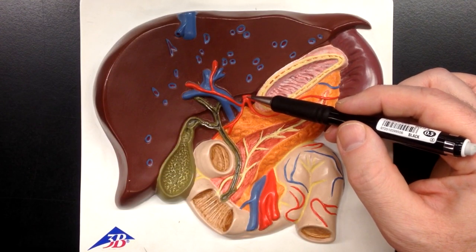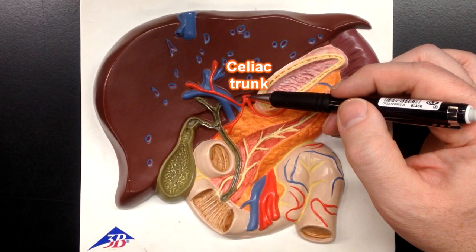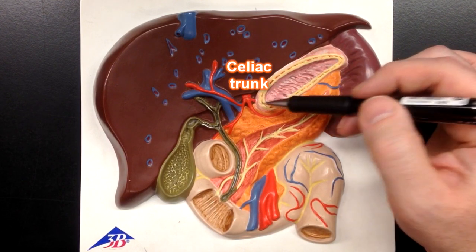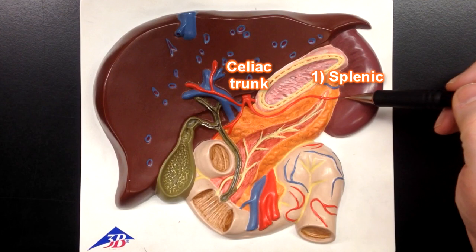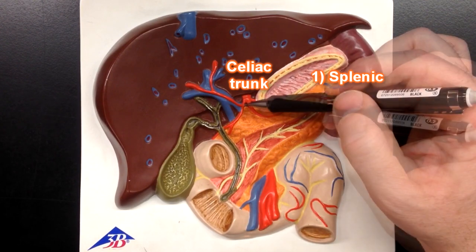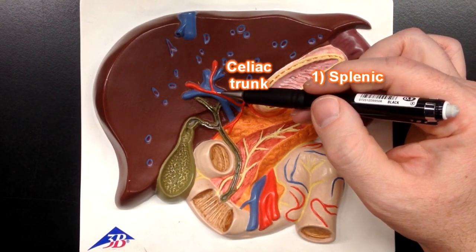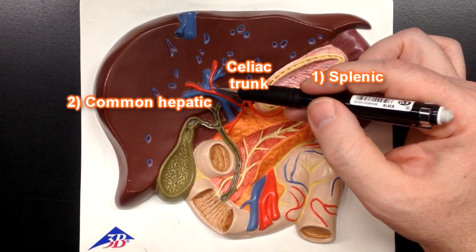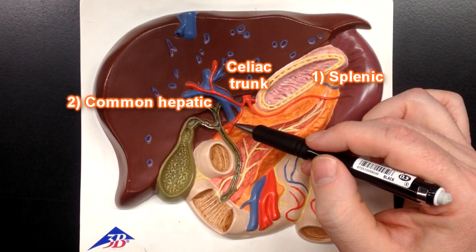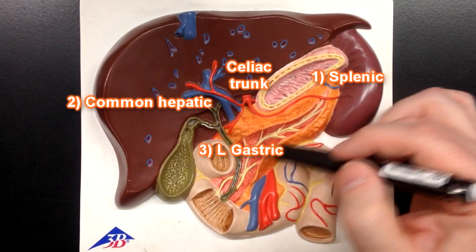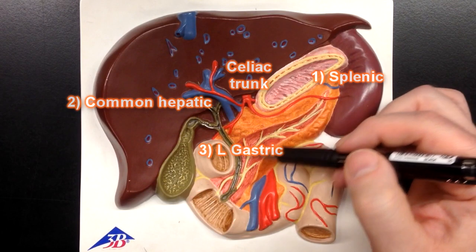This blood vessel right here is going to be the celiac trunk, and the celiac trunk has three branches. There's going to be this branch that goes to the spleen, called the splenic artery. There's going to be this branch that goes up toward the liver — that's the common hepatic artery — and that of course will branch. And then this right here is a branch that goes to the lesser curvature of the stomach — that's the left gastric artery.